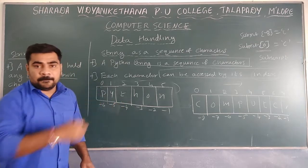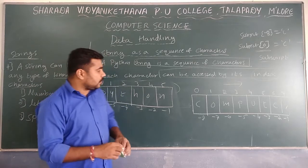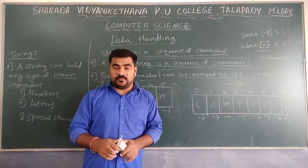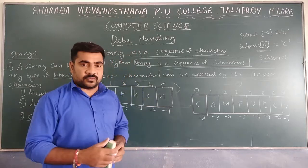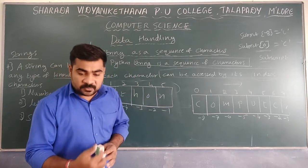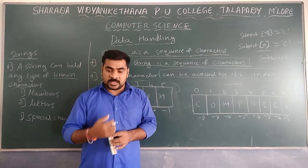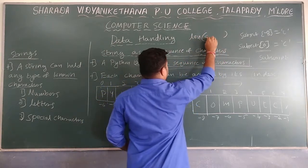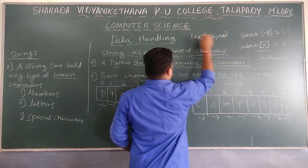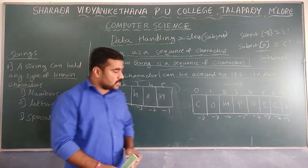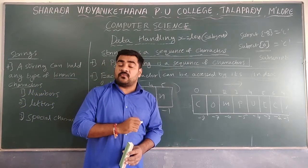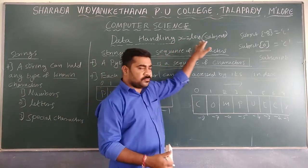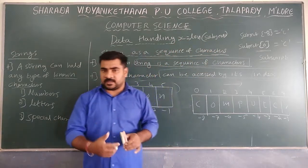So based on backward and forward indexing, how can we find the total length of the variable? We can make use of the length function. For example, x equal to len(subject) — the len() function is used to find the total length of the variable string. We will study this in detail in the upcoming string chapter.